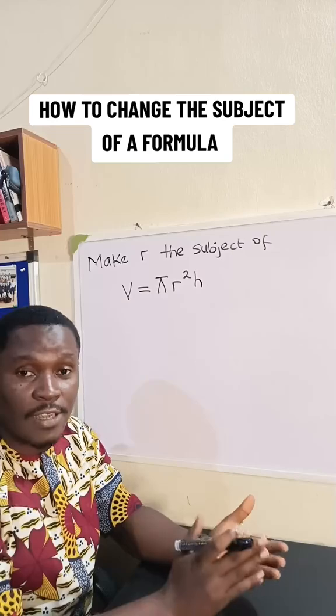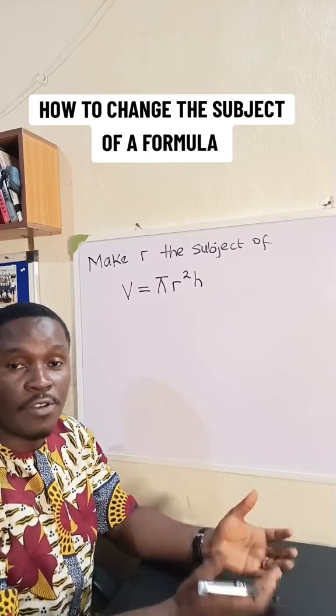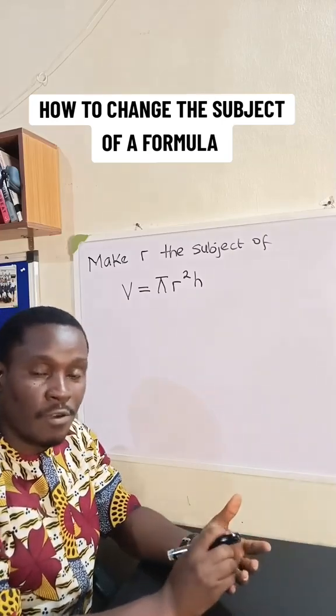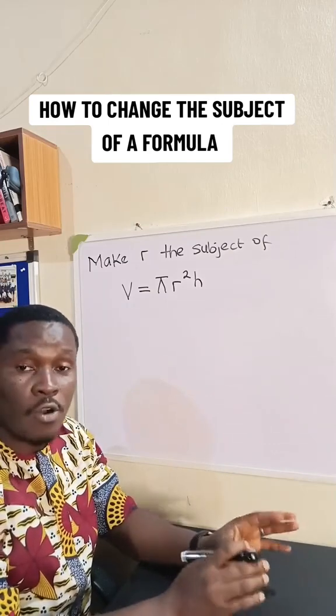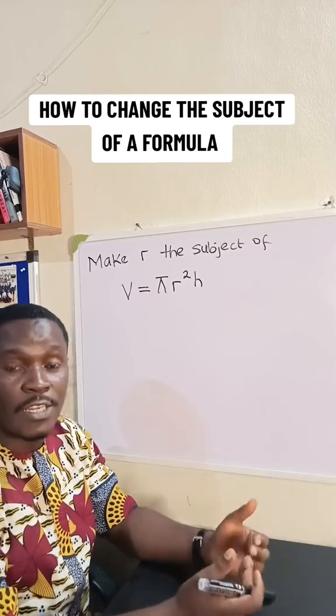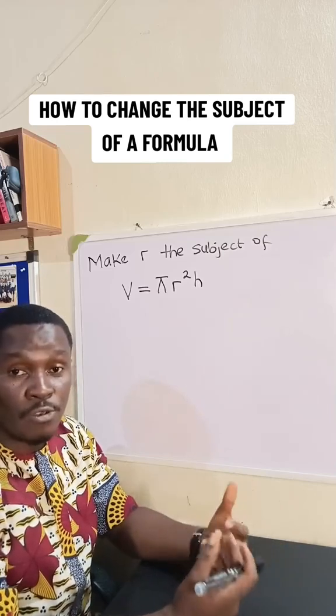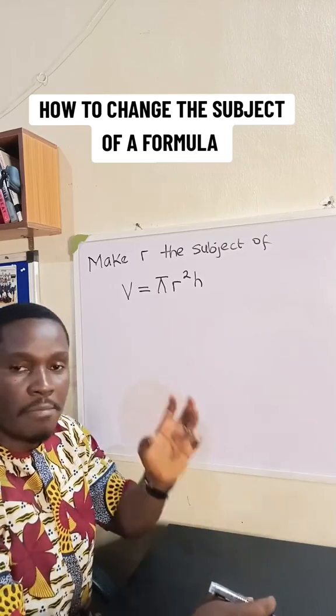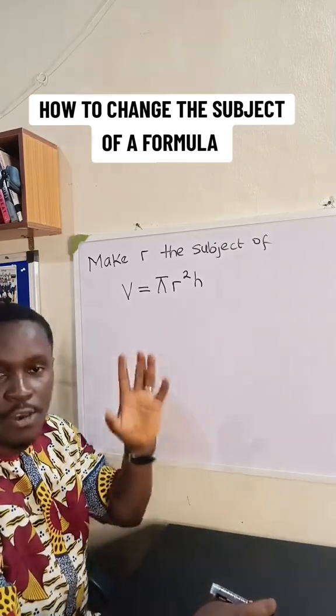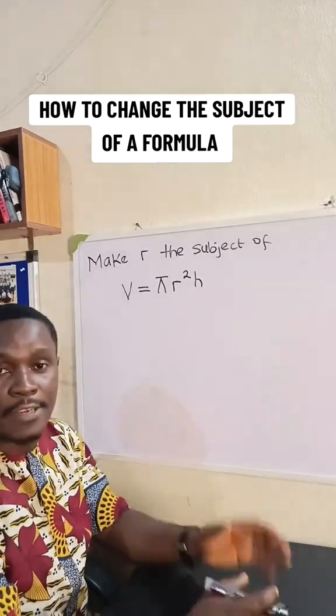So the first thing we need to ask ourselves is what is a subject of a formula? The subject of a formula is the value we are trying to calculate. It is always found on one side of the formula, especially on the left side. So whenever you are told to make an alphabet the subject of a formula, it simply means make that alphabet to be alone on the left side of the formula.